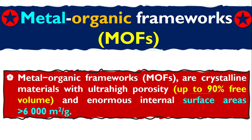What does this mean? This means that if we take one gram of this MOF material, it will cover a square area of about 6000 m². This is a very high specific surface area. I myself synthesized multi-porous nanofibers during my PhD, and the surface area was about 78 m² per gram. So this material is truly extraordinary.